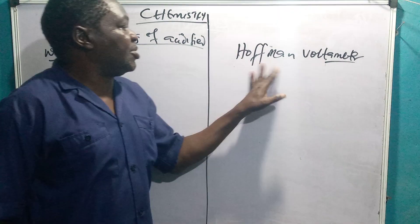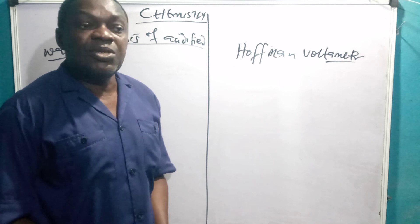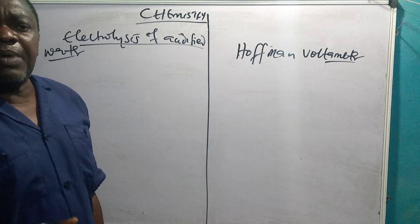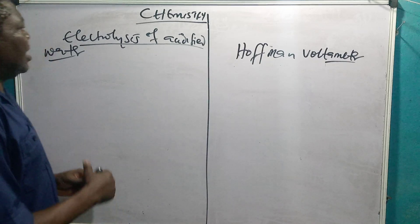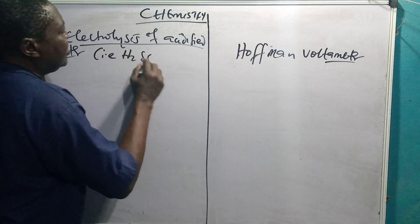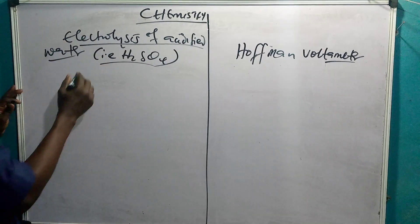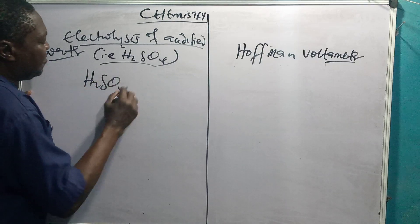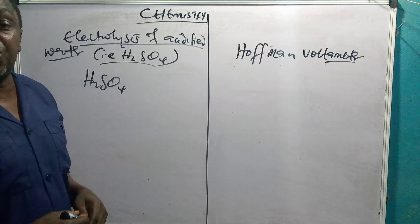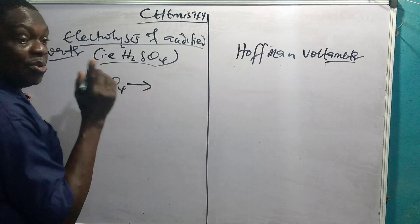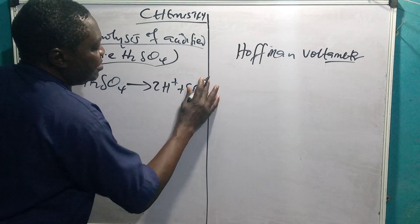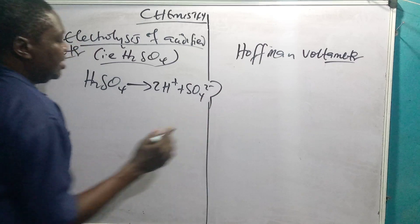Now the major thing we are going to talk about in this topic is how it is carried out and the basic thing you need to know. Now if you are carrying out electrolysis of acidified water, remember we said acidified water means dilute H2SO4. In this electrolysis, you have the H2SO4 acting as the electrolyte. Remember, since it is an electrolyte, it will undergo dissociation or ionization. It will ionize in solution to give 2H+ plus SO4 2-. This is the electrolyte.